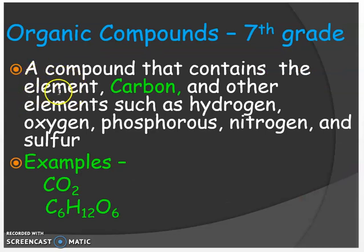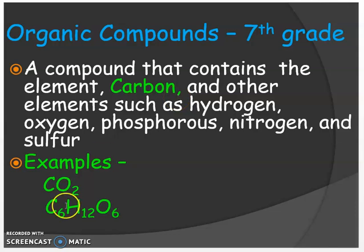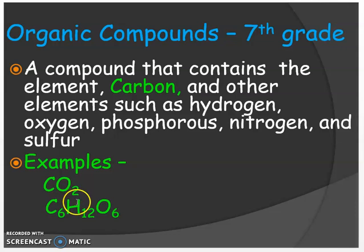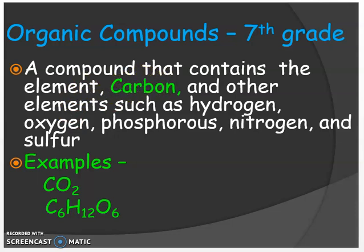An organic compound is a compound that contains the element carbon along with elements such as hydrogen, oxygen, phosphorus, nitrogen, and sulfur. Examples include CO2, which is carbon dioxide, and C6H12O6, which is glucose. Organic compounds must contain carbon.